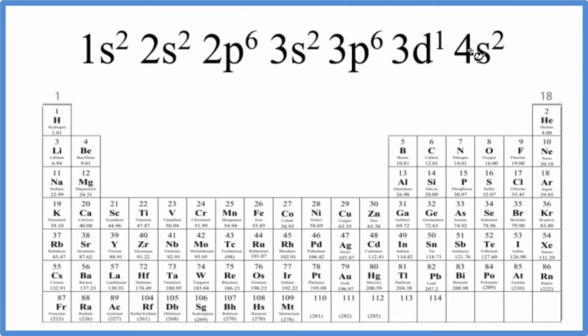There are two main ways we can figure out which element is represented by this electron configuration that ends in 3d¹ 4s².